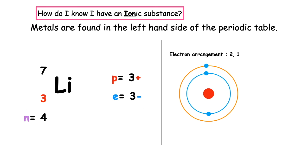Because we have 3 positives and 3 negatives, they cancel each other out, which tells us that that's an atom. We know that all elements want to achieve stability by having a full stable outer electron shell.